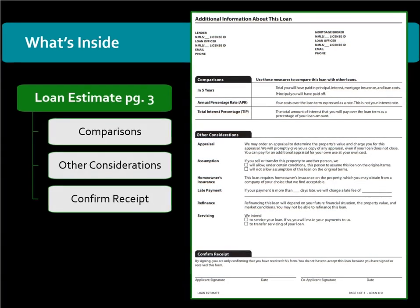The third page provides comparisons, other considerations, and confirm receipt. The comparison table discloses information related to the cost of the loan in five years, the annual percentage rate, and the total interest percentage.